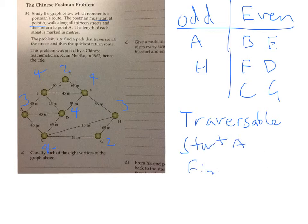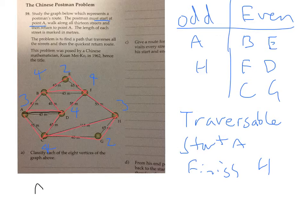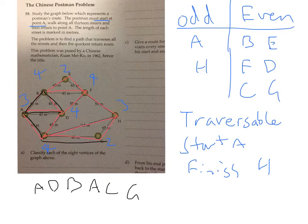Because it has two odd vertices, we start from one and end at the other. They tell us it needs to start at point A, so we'll start at A and finish at H. Let's get another pen color and trace the path — starting at A, it shouldn't matter which way I go.